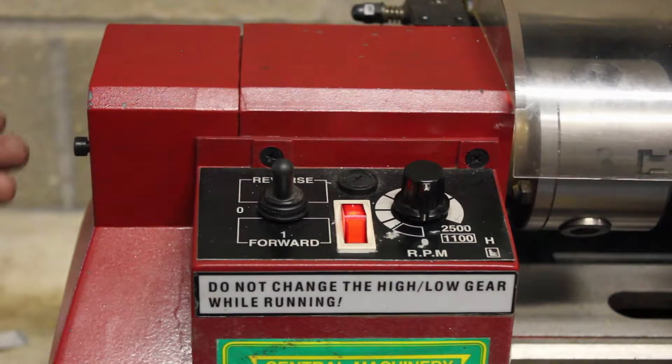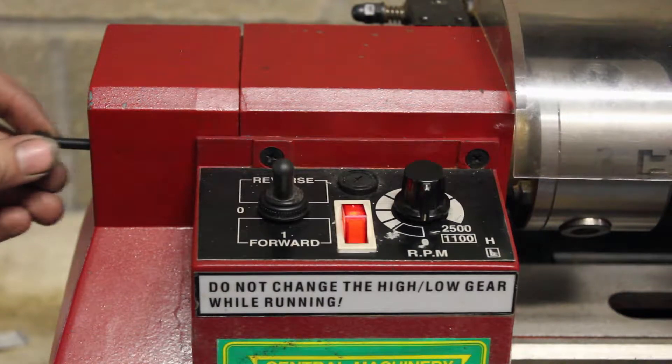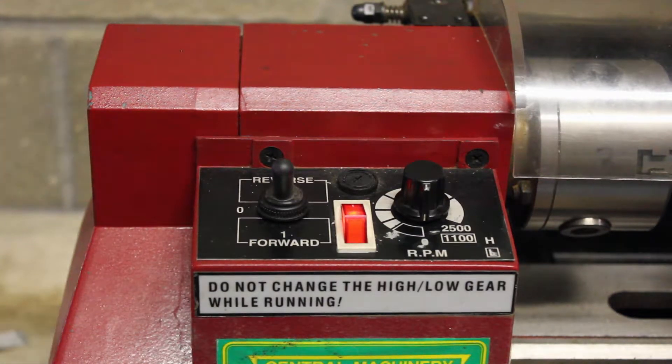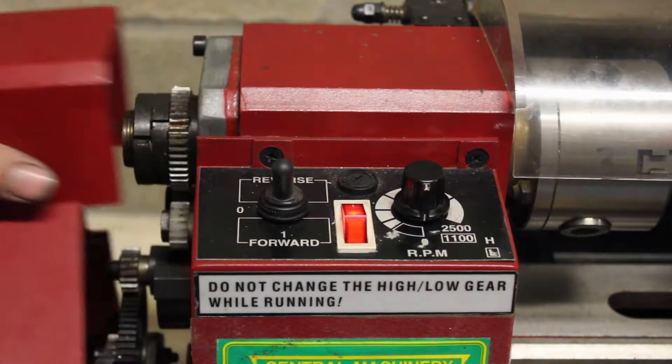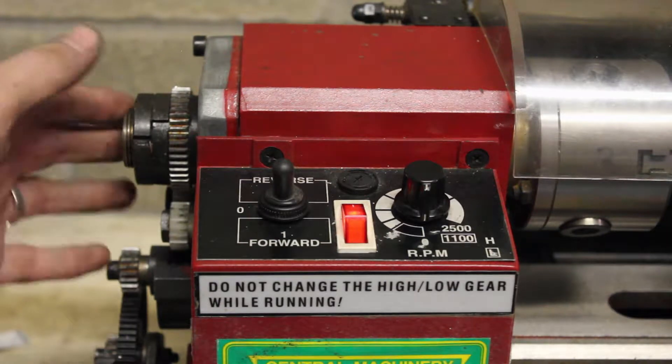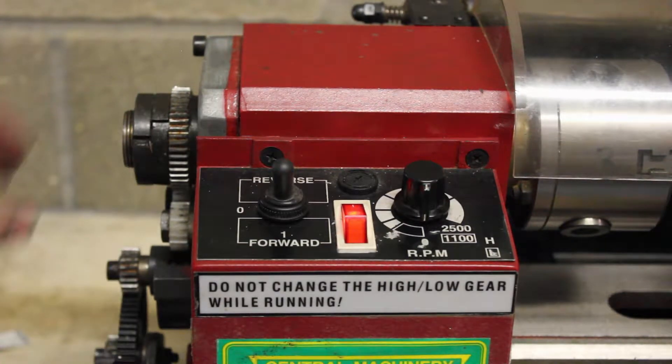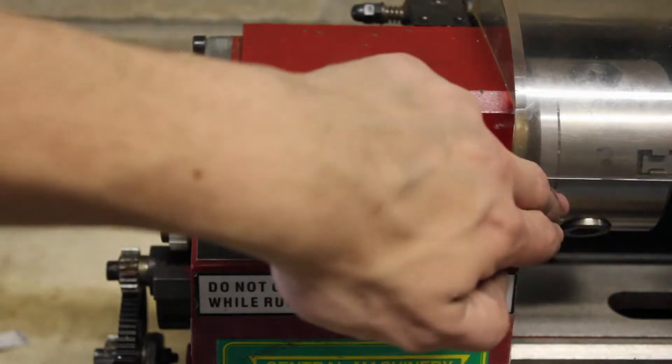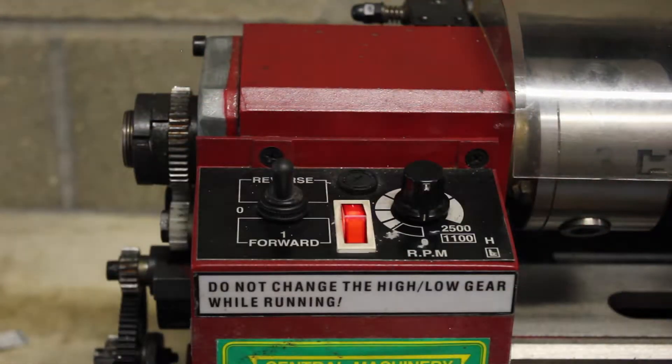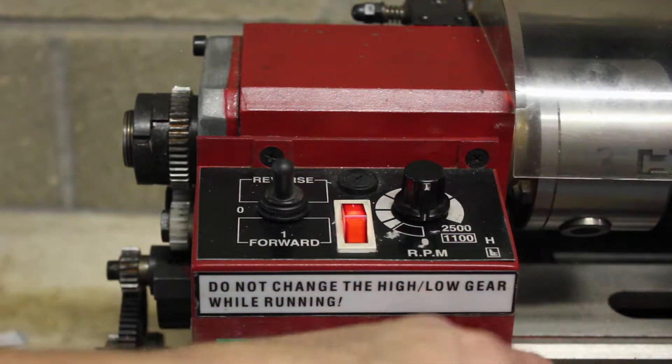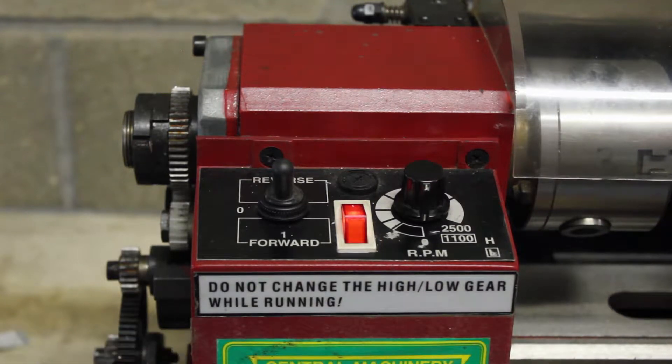So another thing on the headstock is this back right here. If you take out these two screws, then this whole back comes off. And we've got all these gears on the side which adjust the ratio between the spindle speed and there's a screw down at the bottom here that controls the feed.